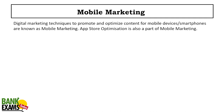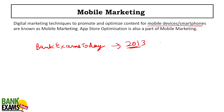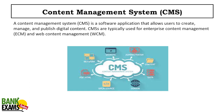Mobile marketing is a method that uses channels of marketing to advertise products via mobile phones — techniques to promote and optimize content for smartphones. For example, Bank Exams Today started as a blog in 2013, and in 2018 we launched an app because many students were using mobile devices. That is mobile marketing.